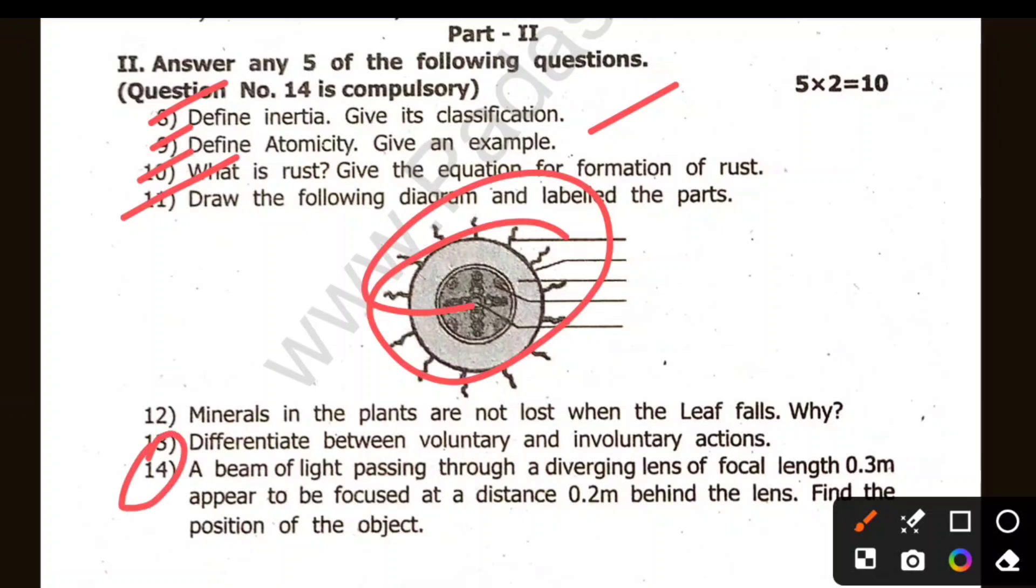A problem sum: A beam of light passing through a diverging lens with focal length 0.3m appears to be focused at a distance of 0.2m. Find the position of the object. This is a physics problem. Ok, it is complete.